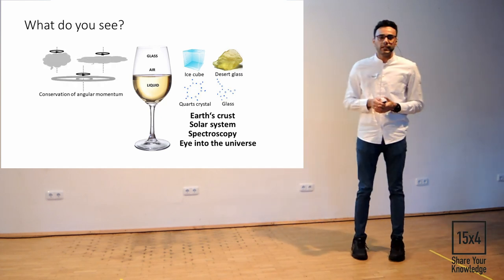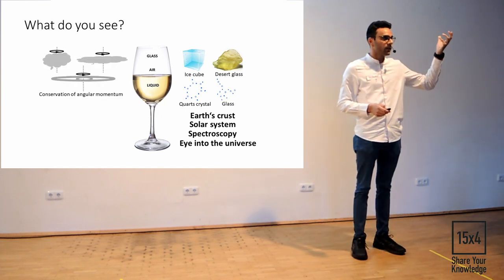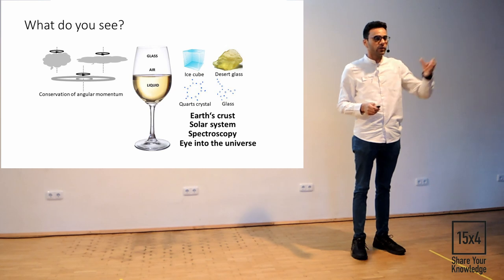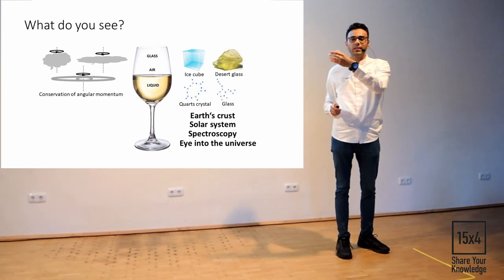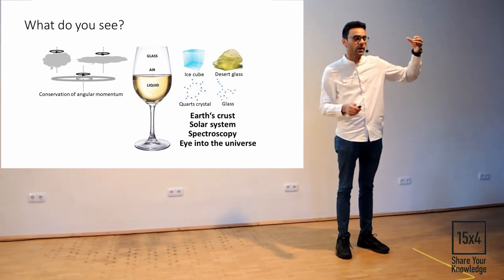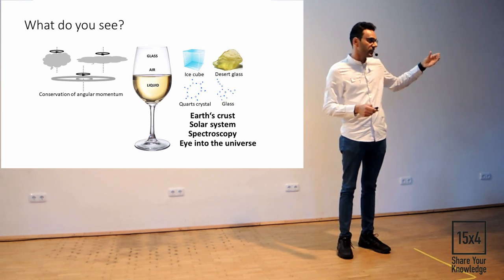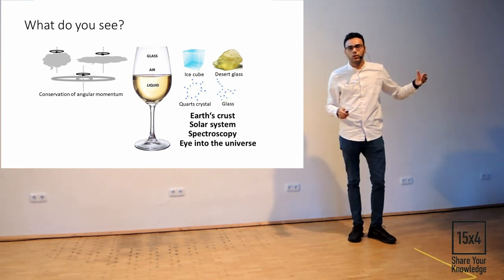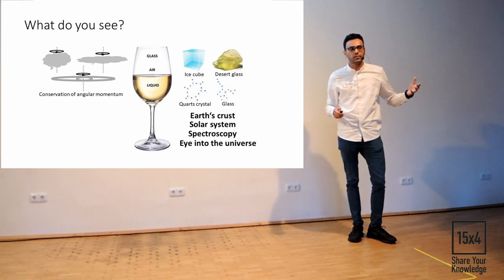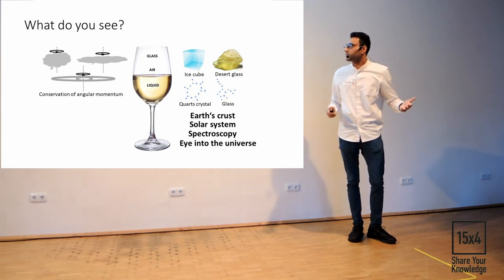Now, let's assume you rotate the glass and then you stop. What you will see is the liquid will keep rotating despite the fact that your hand is stopped. What does that tell you? That is the law of angular momentum. If you understand that, what can you understand through the law of angular momentum?